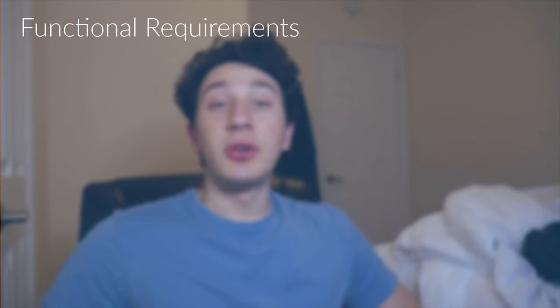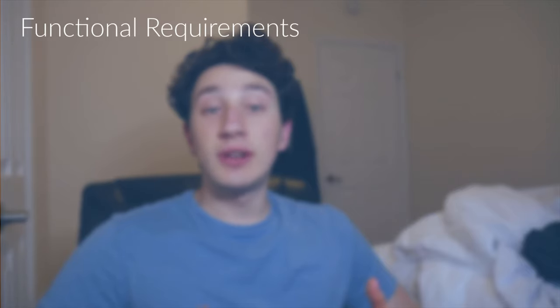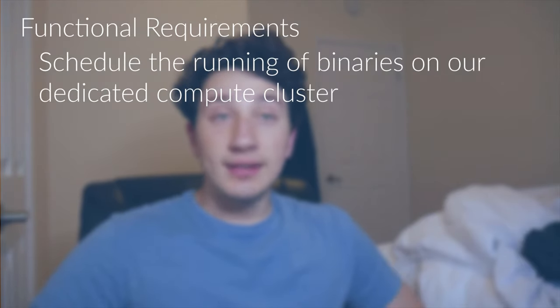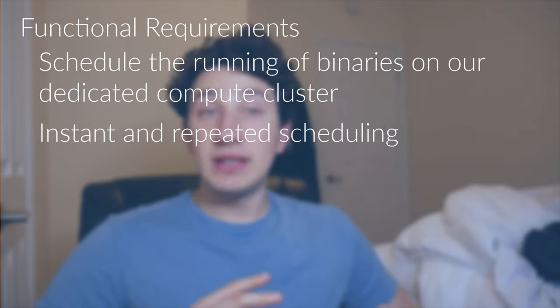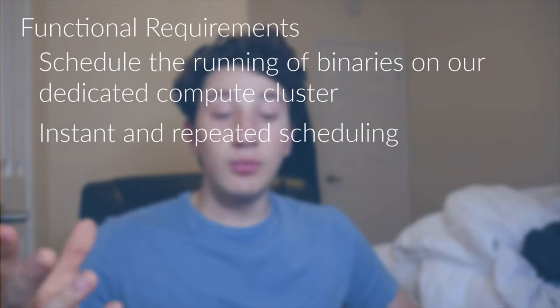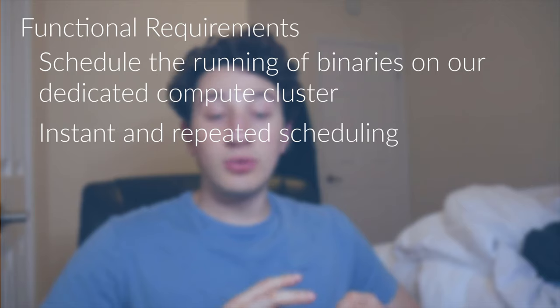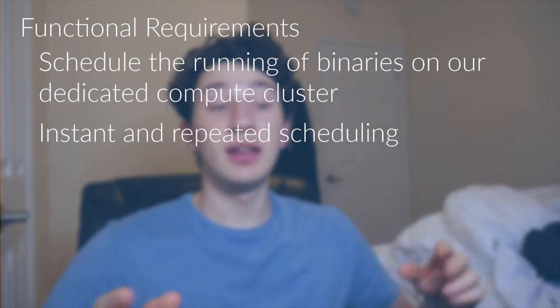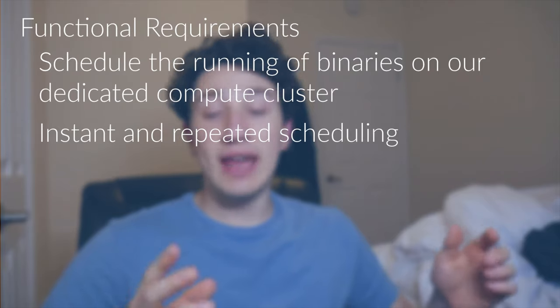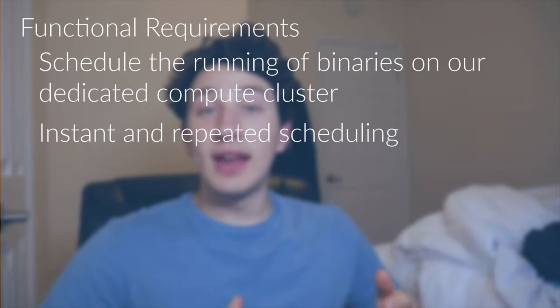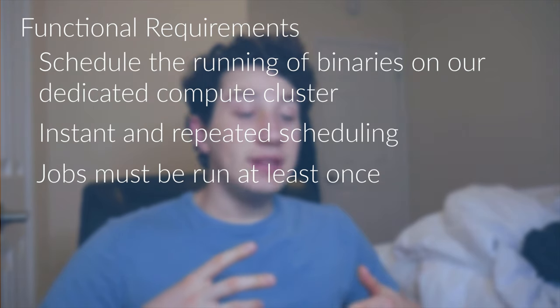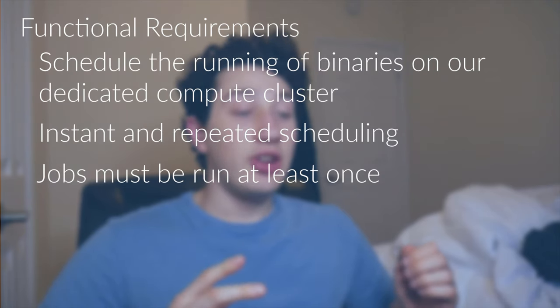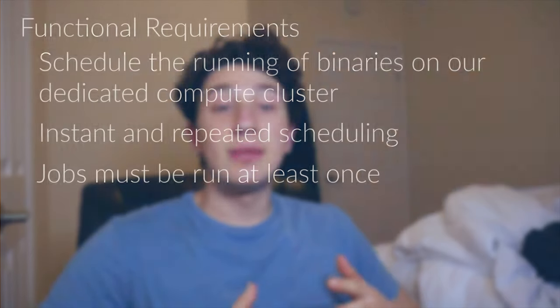Basically, here is going to be what we need to implement. We have to be able to schedule jobs that are going to run on our dedicated cluster of compute units, which are probably just going to be some sort of servers in a data center. In addition to that, we're going to allow multiple different types of scheduling. So that could be something like instant scheduling, where you say run this now, or scheduling according to some sort of calendar schedule or cron job, where you say run every two weeks, run every month, run every day at 5 o'clock p.m. EST. And in addition, it's very important that every single job is going to be run at least once. We never want it to be the case that a job somehow gets overlooked by our system.